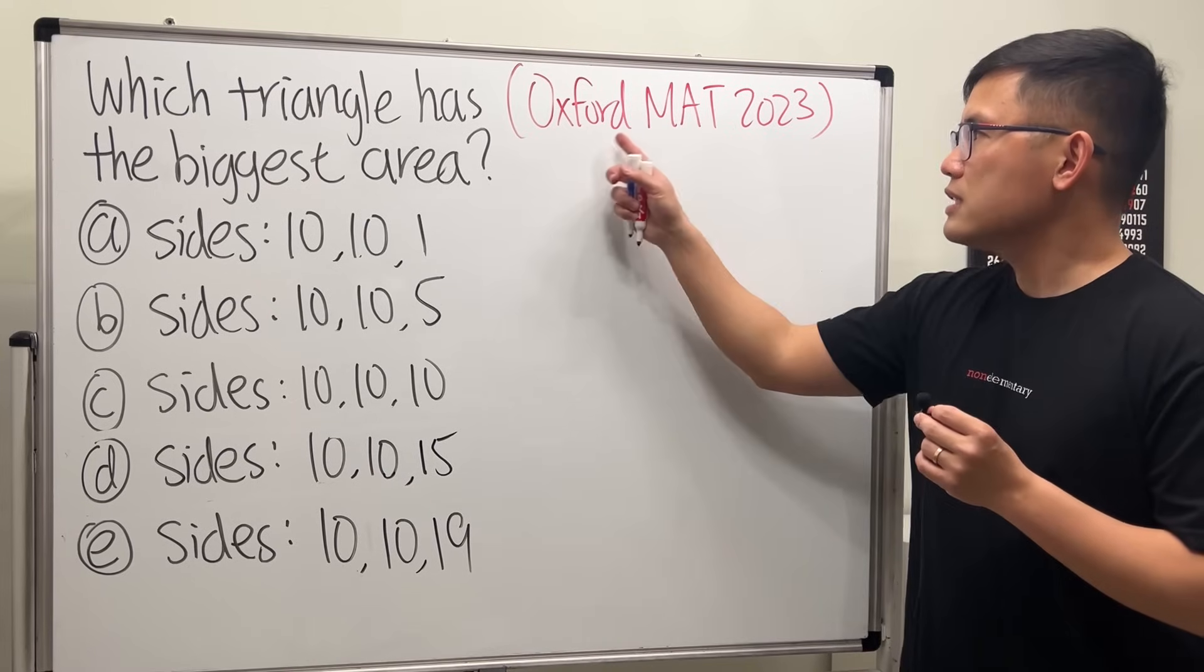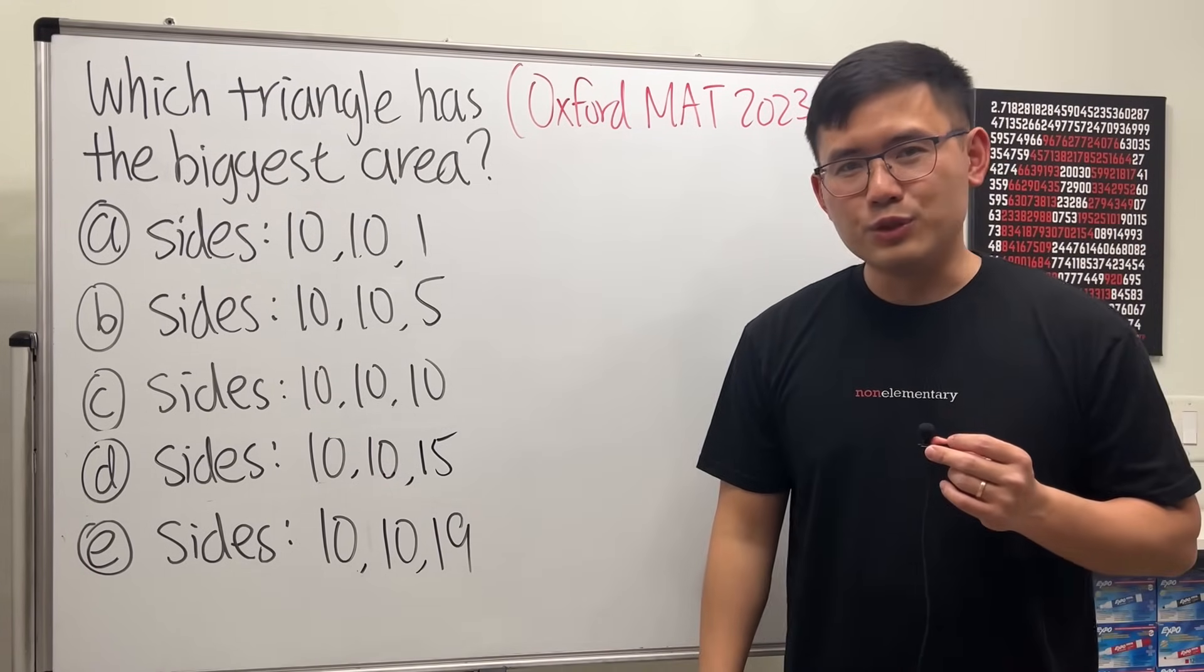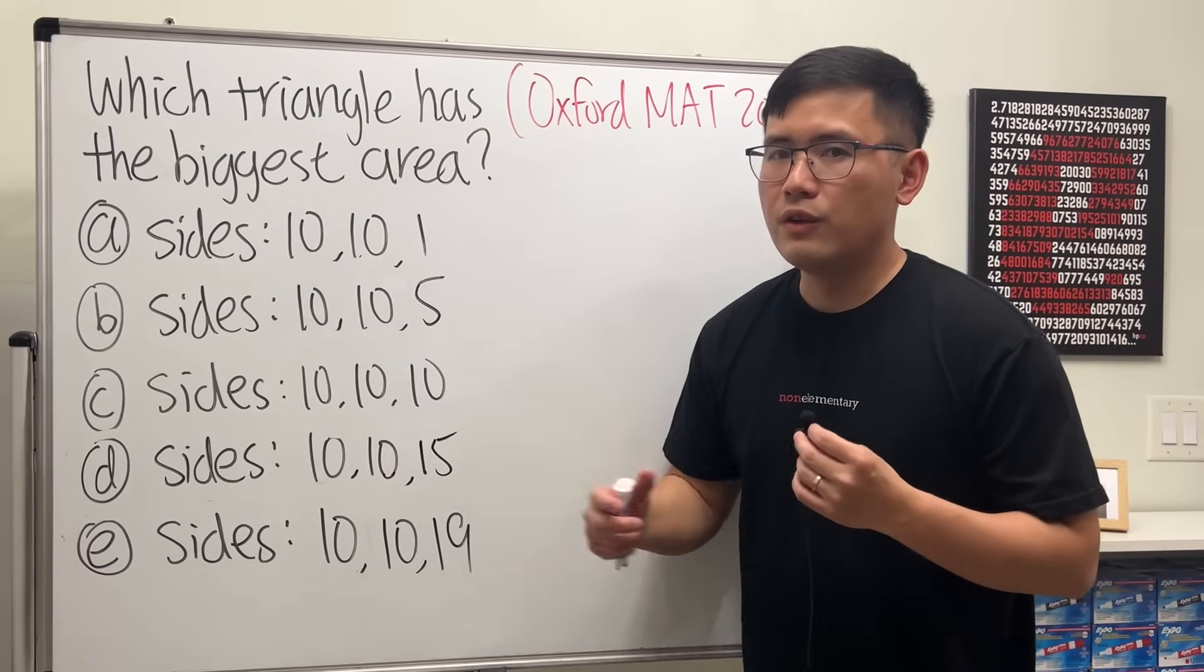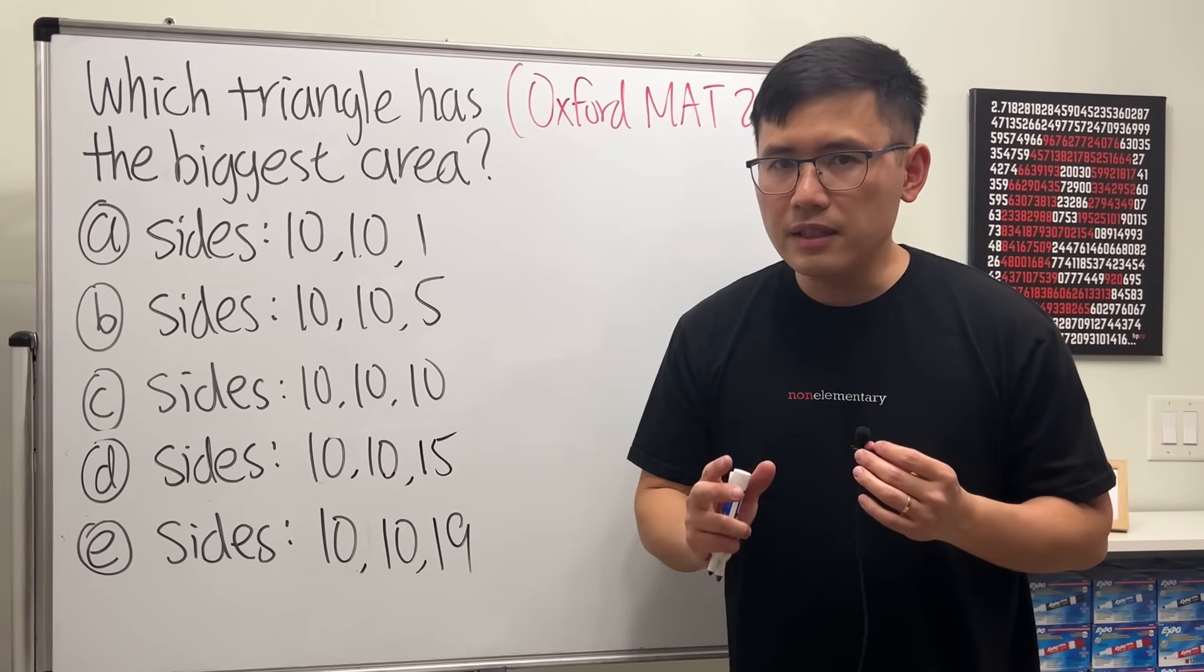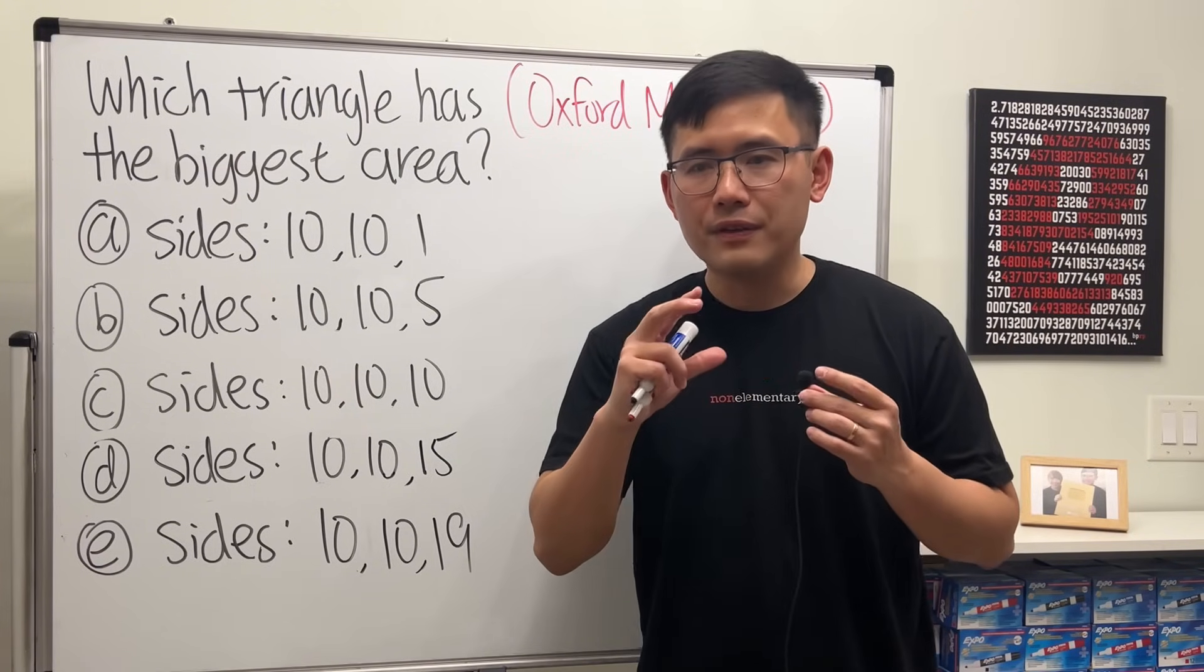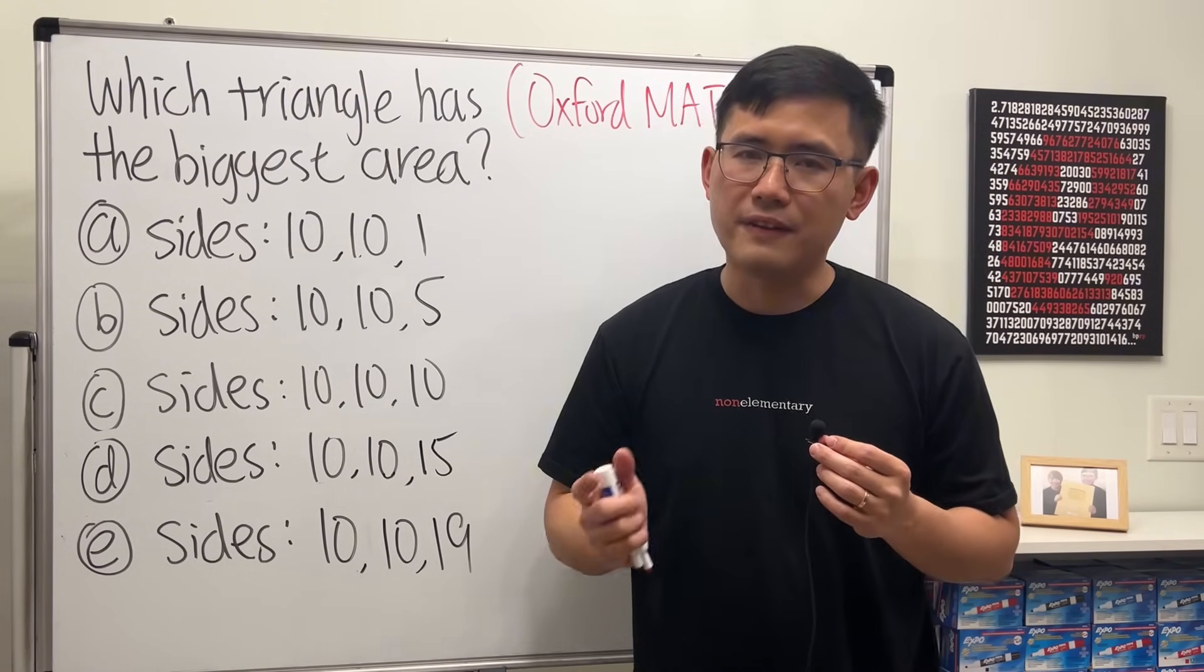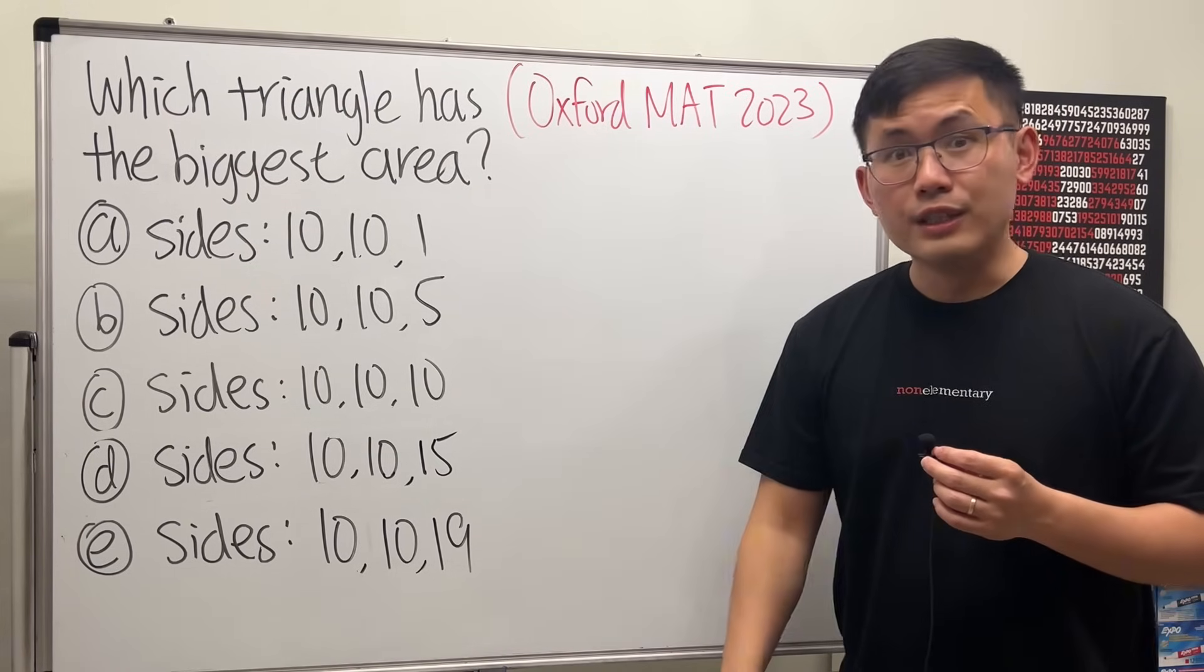This question is from the Oxford MAT admission test in 2023. I think it's really nice. At first I thought the answer is 10, 10, 10, an equilateral triangle, but that's only under the condition when we have all triangles with the same perimeter. Whenever you have triangles with the same perimeter, the equilateral triangle has the biggest area. That's a fact. But all the perimeters are different, so we can't use that.